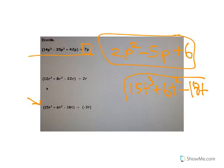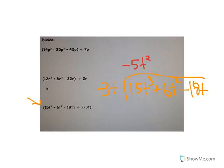I have negative 3t as the divisor. The first thing I need to do is figure out how to change negative 3t into 15t cubed. How do I change the number into 15? By multiplying by negative 5. How do I change t into t cubed? By multiplying by t squared. When I do that, I end up with 15t cubed, giving zero.